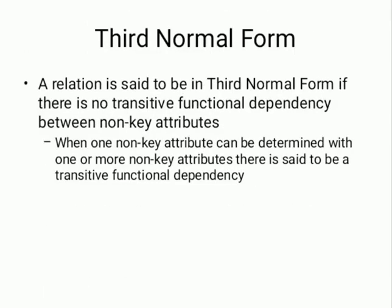Third Normal Form: a relation is said to be in third normal form if there is no transitive functional dependency between non-key attributes. When one non-key attribute can be determined by one or more other non-key attributes, there is said to be a transitive functional dependency.